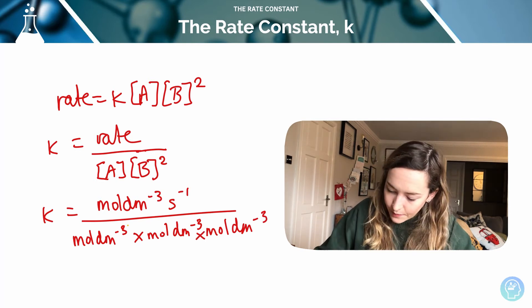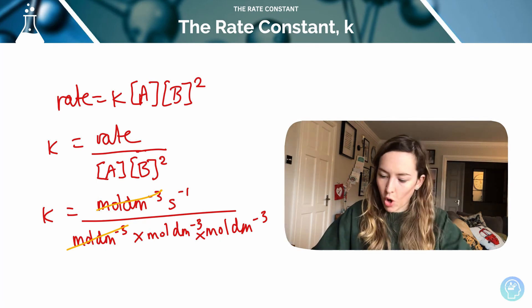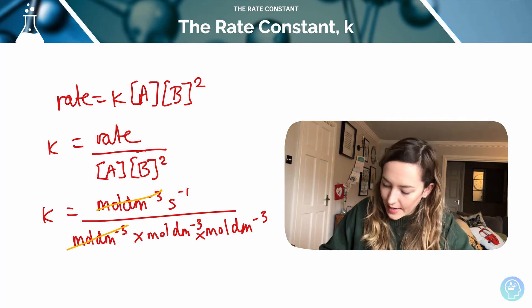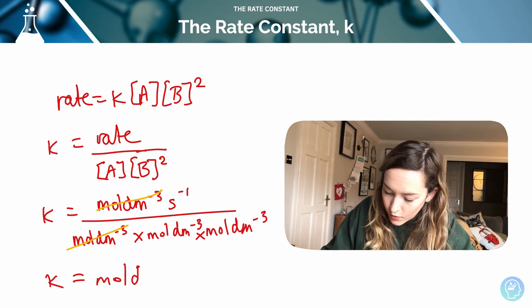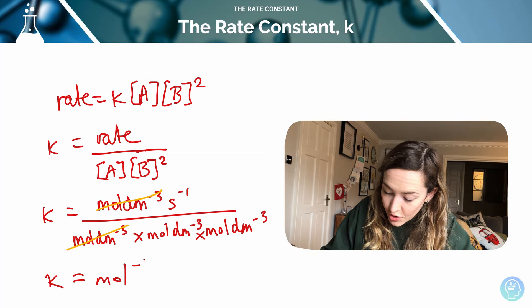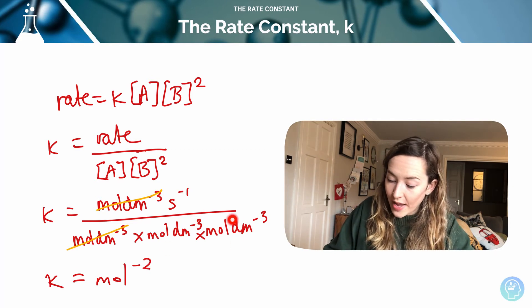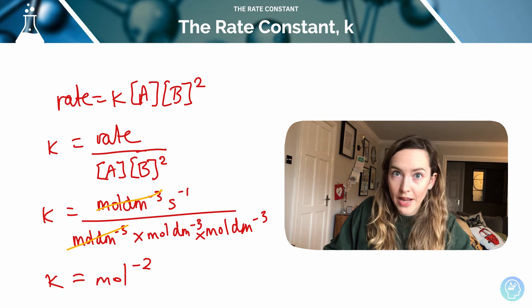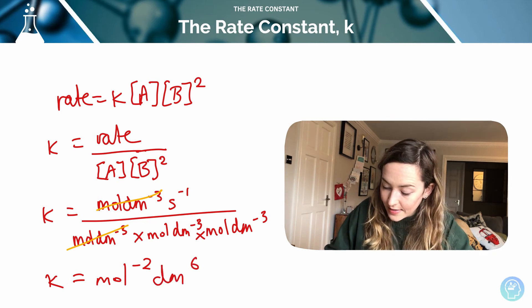I can cancel out two of my moles per decimetre cubed, or one on the top and one on the bottom, and what that's going to leave me with is k being equal to moles to the minus 2, because they are underneath, the two that are left are underneath, they are the denominator of my fraction, so they're to the minus 2 decimetres to the 6, because they are the denominator,